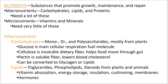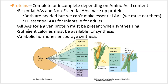Proteins can be classed as either complete or incomplete depending on whether they've got all of the essential amino acids or not. Essential amino acids are ones you have to eat — you can't make them yourself. If a protein has all of the essential amino acids it is a complete protein; if it's missing one or more it is an incomplete protein. For instance, the protein in corn is incomplete because it's missing isoleucine and lysine. The proteins in beans are also incomplete because they're missing tryptophan and methionine, but together they form a complete protein.